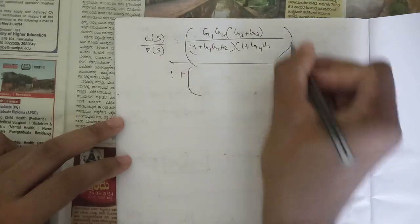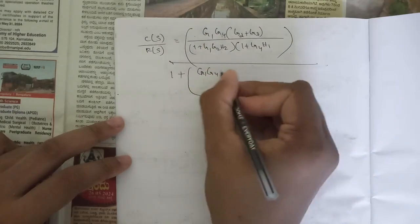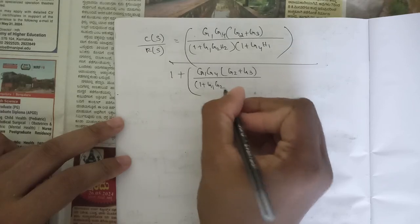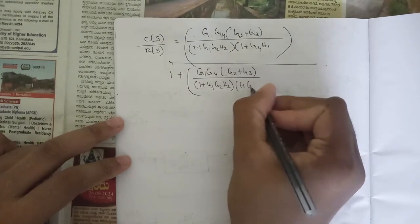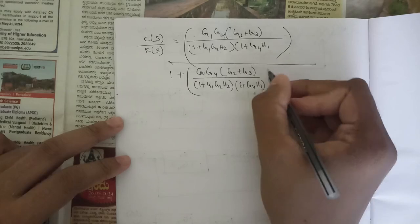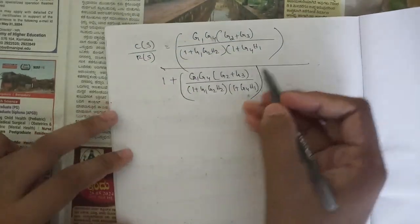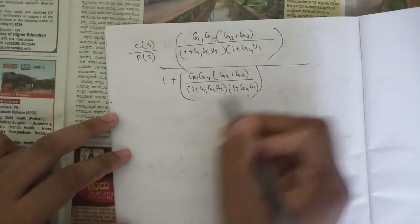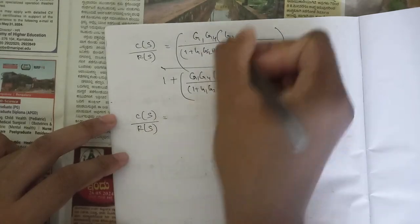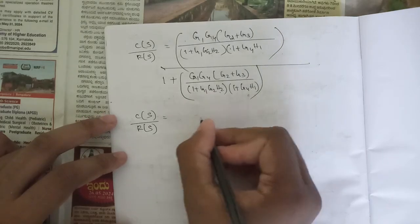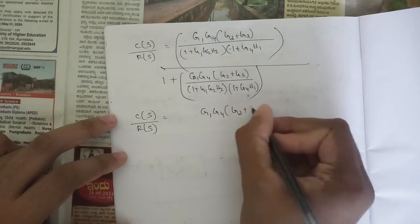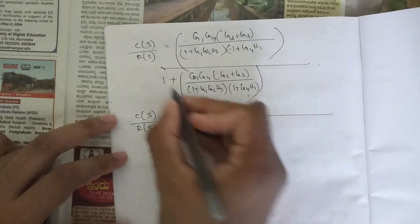Since h(s) = 1 we don't need to write it. Now we reduce: we have a common denominator, so we take the LCM and cancel. Taking the LCM in the denominator and cancelling on both sides, the numerator left is g1·g4·(g2 + g3), and the denominator after taking the LCM becomes...